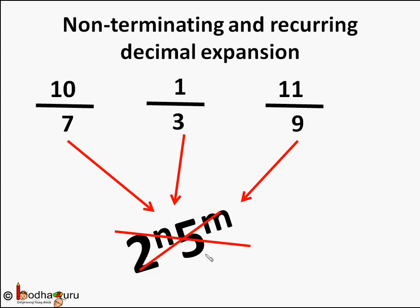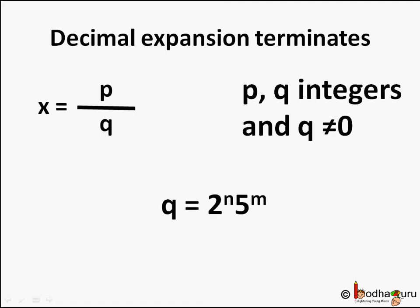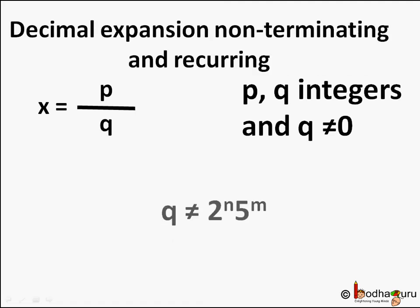So we can safely say: if x equals p by q is a rational number such that the prime factorization of the denominator q is of the form 2 to the power n into 5 to the power m, where n and m are non-negative integers, then x can be expressed as a terminating decimal number — like 4 by 5, 1 by 8, 1 by 10, and so on. And if the prime factorization of denominator q is not in that form, then the decimal will be non-terminating and recurring — like 4 by 15, 10 by 7, 1 by 3.